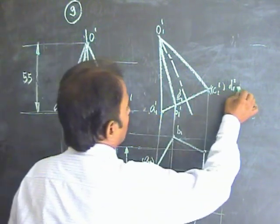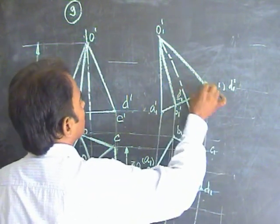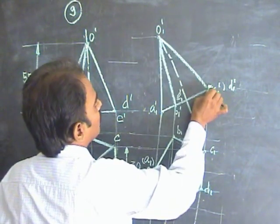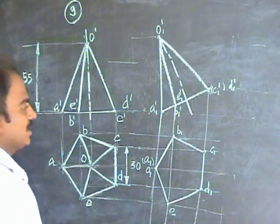Now, follow the rule. Go to the extreme corners. Here is one extreme corner. Here is another extreme corner. OC and OD are invisible. Except OC and OD, everything is visible.